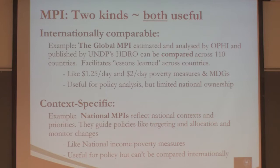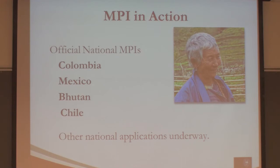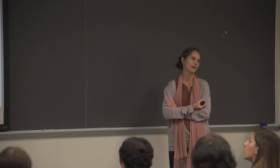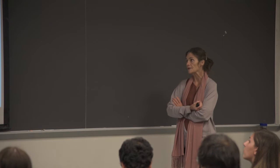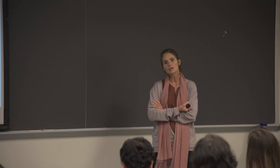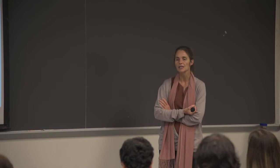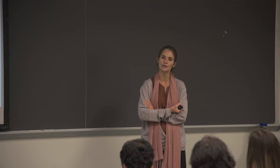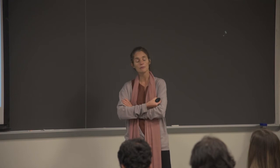We're going to present some of the official national multidimensional poverty measures — they're official statistics of the country, updated regularly, and used in policies. One way we'll do this is by going through the structure of different countries, giving you an idea of how different countries choose dimensions, indicators, cut-offs, and weights. You'll see examples of how and why they have made these normative decisions.